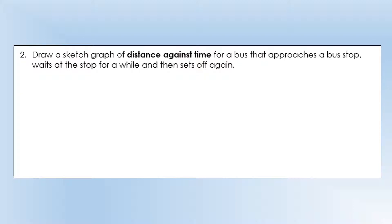Draw a sketch graph of distance against time for a bus that approaches a bus stop, waits at the stop for a while, and then sets off again. Here are axes for distance versus time. As it approaches the stop, it's going to be slowing down, so the gradient is going to be decreasing. At the stop, it's stationary, so its distance isn't going to change. And then it's going to accelerate away from the stop, so its speed increases, so the gradient increases.